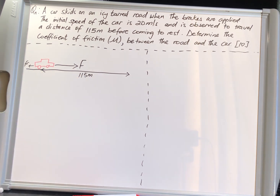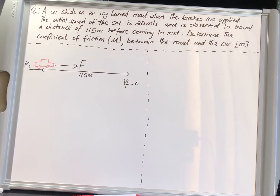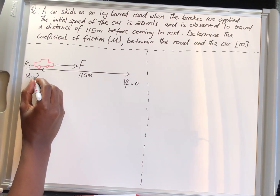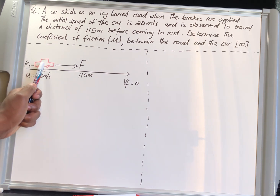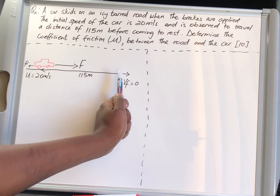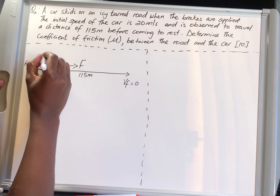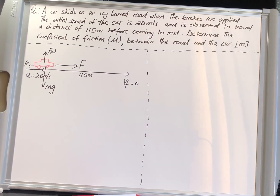This car is going to move under the influence of friction until it stops. Since it stops, the final velocity becomes zero. The initial velocity, which we call u, is 20 meters per second. The moment the driver applies the brakes, the engine is no longer pulling the car. The forces acting on the car are the frictional force as well as the normal force Fn, and the car also has a weight acting due to gravity.